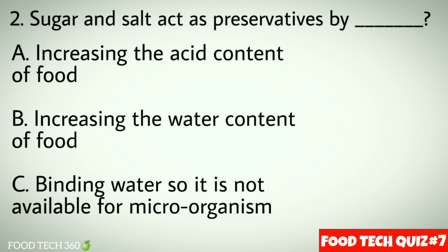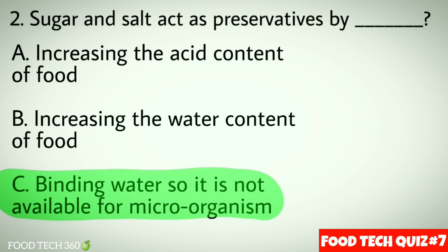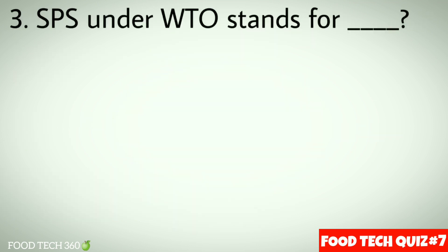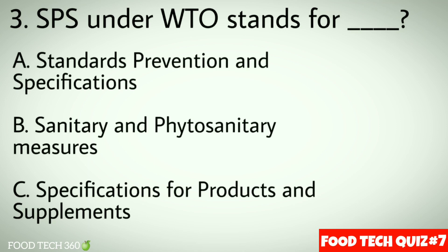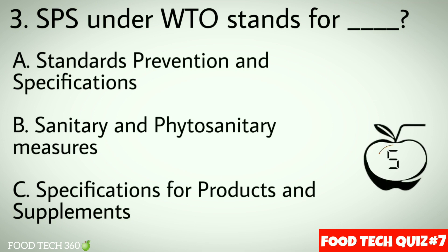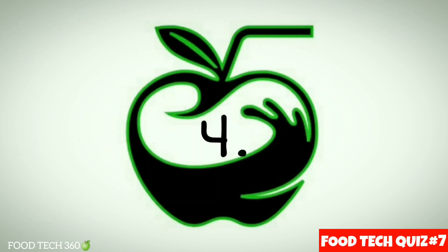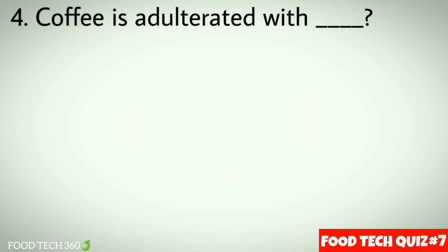Correct answer: c) Binding water so it is not available for microorganisms. Question number 3: SPS under WTO stands for — options: a) Standards Prevention and Specifications, b) Sanitary and Phytosanitary Measures, c) Specifications for Products and Supplements. Correct answer: b) Sanitary and Phytosanitary Measures. Question number 4: Puffed rice is adulterated with — options: a) Sawdust, b) Chicory, c) GI. Correct answer: b) Chicory.